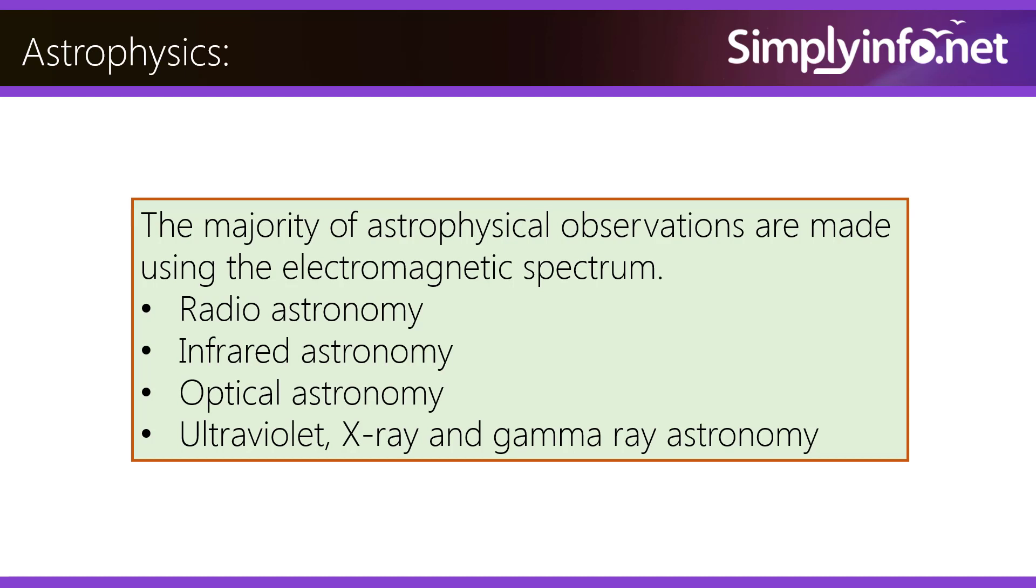The majority of astrophysical observations are made using the electromagnetic spectrum: radio astronomy, infrared astronomy, optical astronomy, ultraviolet, X-ray, and gamma ray astronomy.